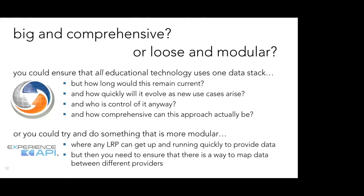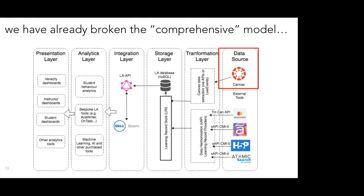You see the interoperability problem very quickly with our ecosystem. We're using Articulate, H5P, Atomic Search, and a whole heap of different things. The Learnosity XAPI data is not the same as the Articulate XAPI data. Just because you put into your requests for information or tender processes that a vendor must emit XAPI data doesn't mean you're going to get the same XAPI data. This is something I've been worrying about quite a bit.